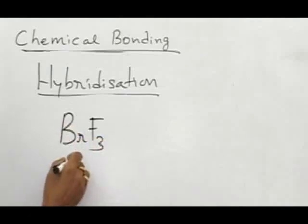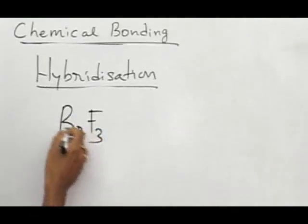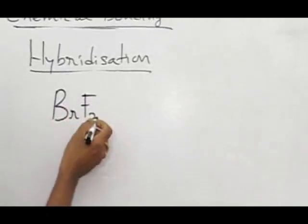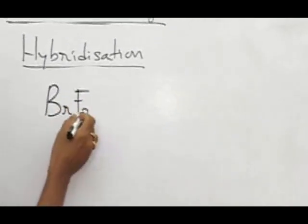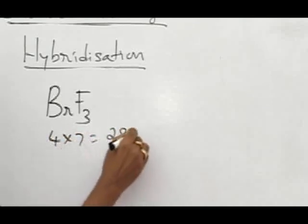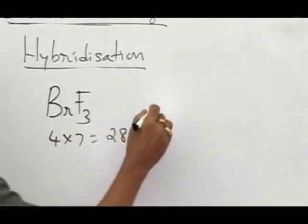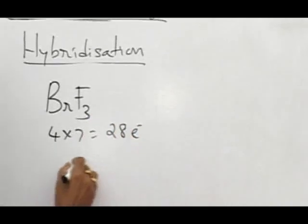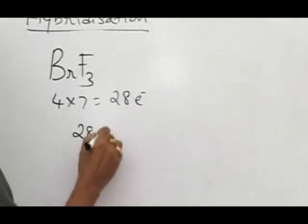And BrF3, now again we count the number of valence electrons. Since Br as well as fluorine, both are halogens, so 1 plus 3, 4, so 4 into 7, now we have 28 valence electrons. And 28 valence electrons, again the same process only, 28 divided by 8.